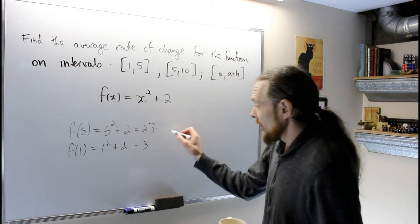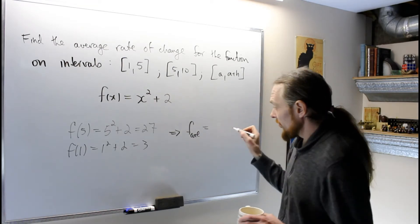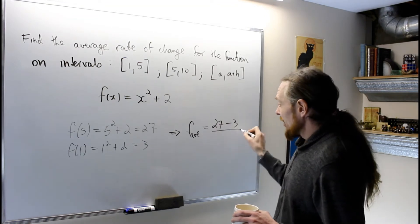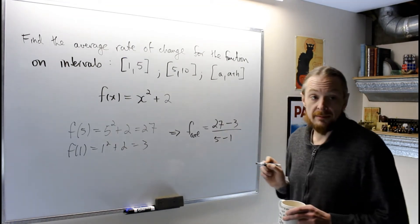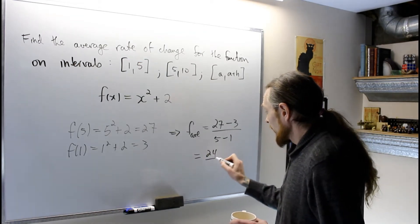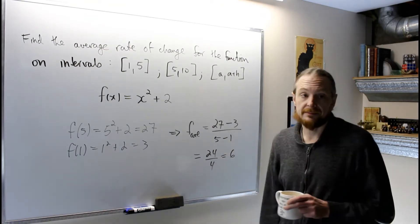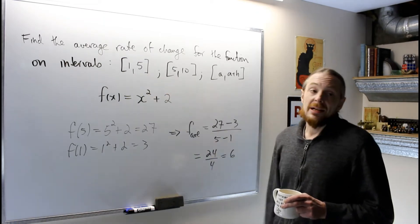So f average equals 27 minus 3 over 5 minus 1, which is 24 over 4, which is 6. The average rate of change on this first interval is 6.